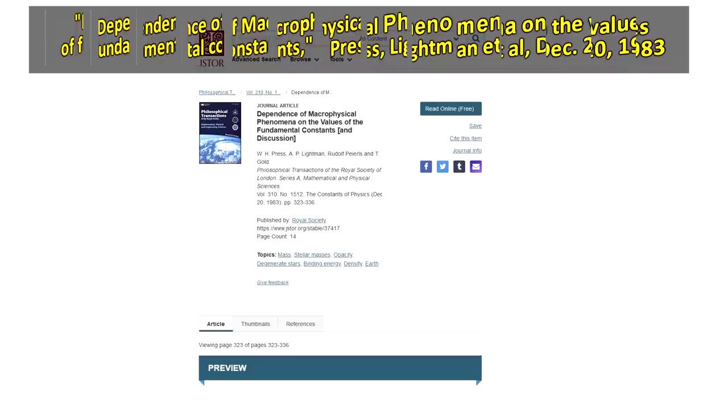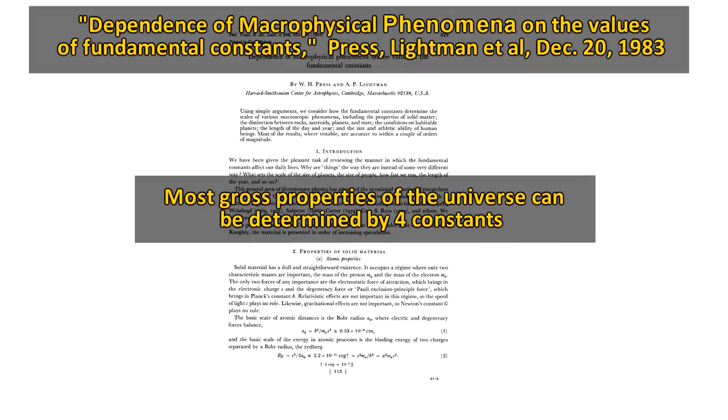In a 1983 paper, Press and Lightman showed that much of the gross properties of the universe, from the dimensions of atoms to the order of magnitude of the lengths of the day and year, can be estimated from the values of just four fundamental constants. These are the strengths of the electromagnetic and strong nuclear interactions, and the masses of the electron and proton.